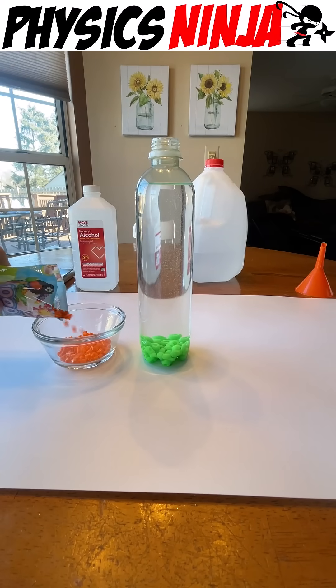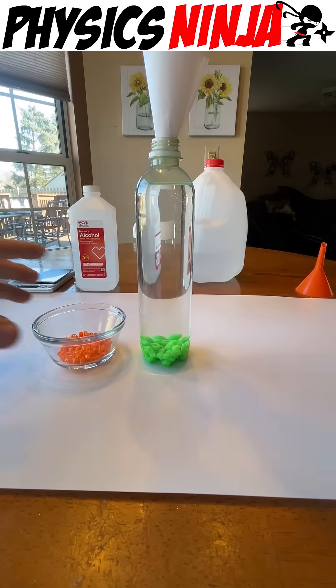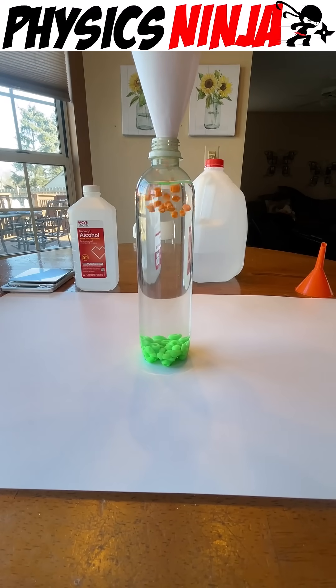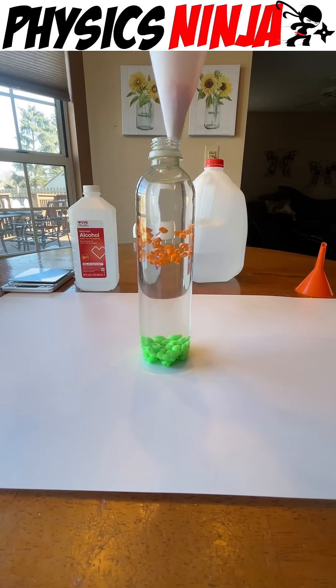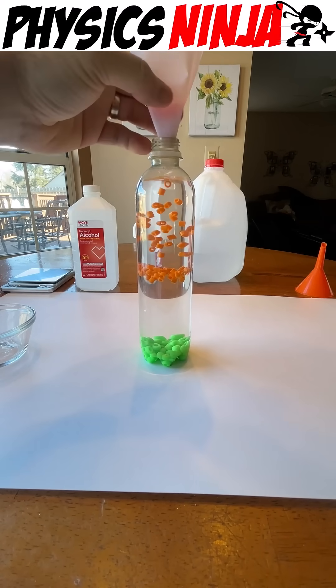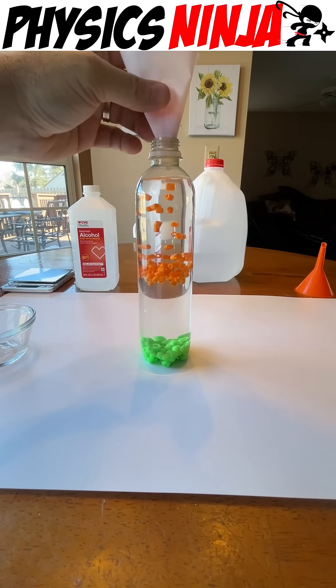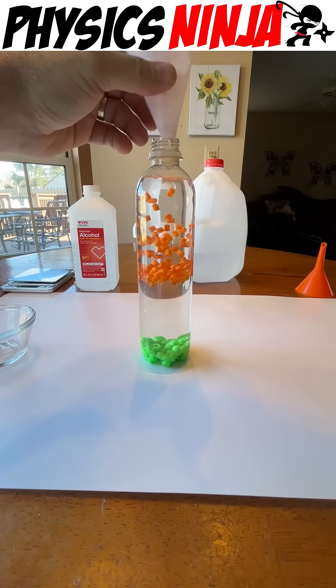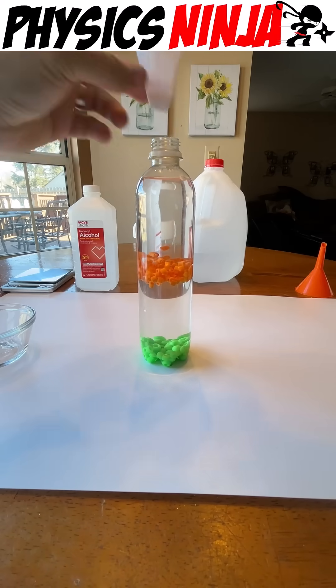It's now time to add the Perler beads. You'll notice that these small Perler beads don't sink all the way to the bottom of the bottle. Instead they stop at the midpoint of the bottle where the isopropyl alcohol meets the distilled water.